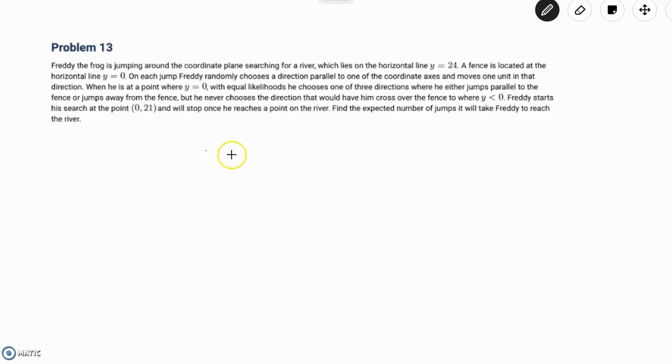So the problem reads: Freddy the Frog is jumping around the coordinate plane, searching for a river, which lies on the horizontal line y equals 24. A fence is located at the horizontal line y equals 0, and on each jump, Freddy randomly chooses a direction parallel to one of the coordinate axes, and moves one unit in that direction. When he is at a point where y equals 0, with equal likelihood, he chooses one of the three directions, where he either jumps parallel to the fence or jumps away from the fence. But he never chooses a direction that would have him cross over to the fence, to where y is less than 0.